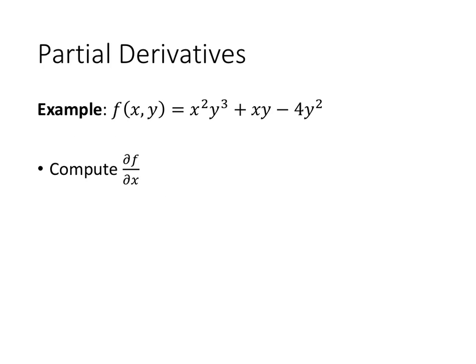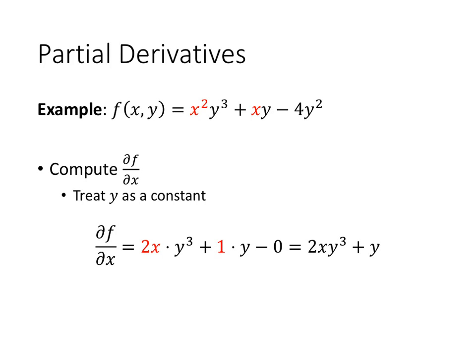Now let's think about how we do this when we actually have a formula for our function. We want to compute del f, del x. What we do is treat y as a constant and take the derivative with respect to x. I've colored in red the actual x variables, and everywhere we see a y, we treat it like a constant number. The derivative of x squared y cubed is simply 2x times y cubed — just like the derivative of 10x squared is 10 times 2x, the y cubed is a constant. Similarly, the derivative of xy is 1 times y, and the derivative of 4y squared is 0 because 4y squared is treated as a constant. So the partial derivative of f with respect to x is 2xy cubed plus y.